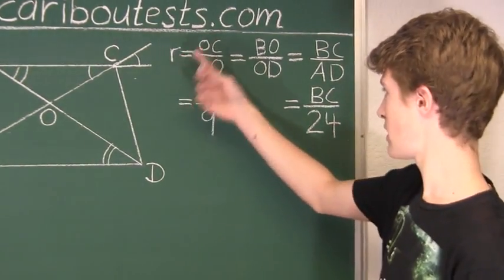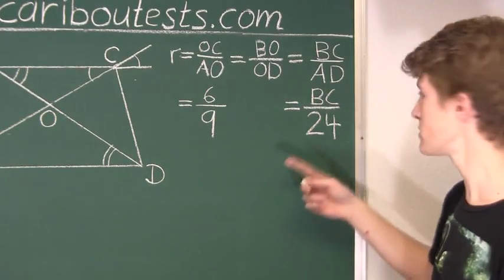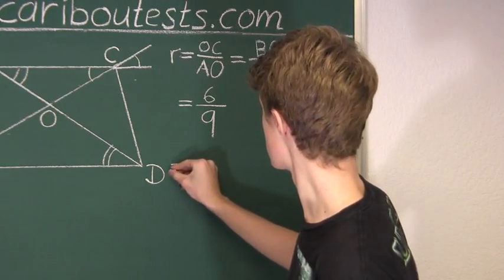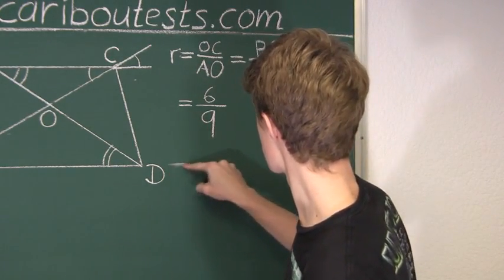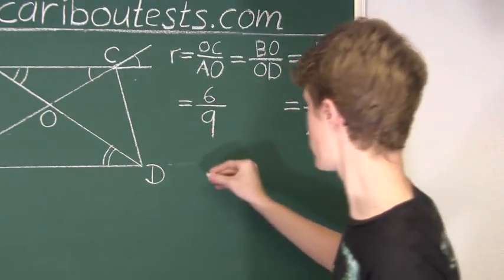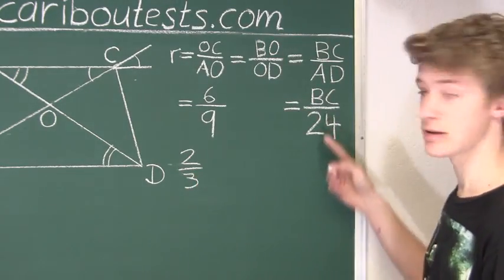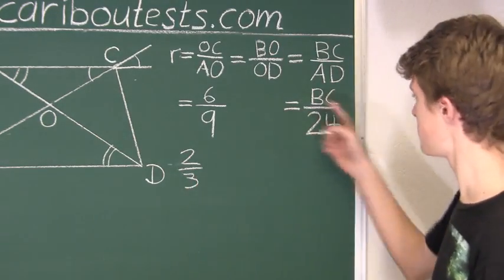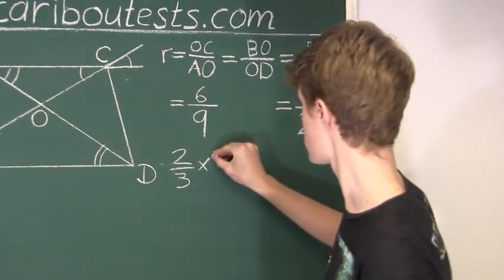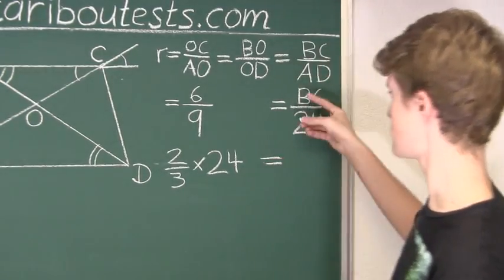Okay, so the scaling factor is 6 over 9, which is also equal to BC over 24, and we want to find BC. So 6 over 9 can be simplified to 2 over 3, and to get rid of this denominator, we will multiply both fractions by 24. So we have 2 over 3 times 24, which is equal to just BC.